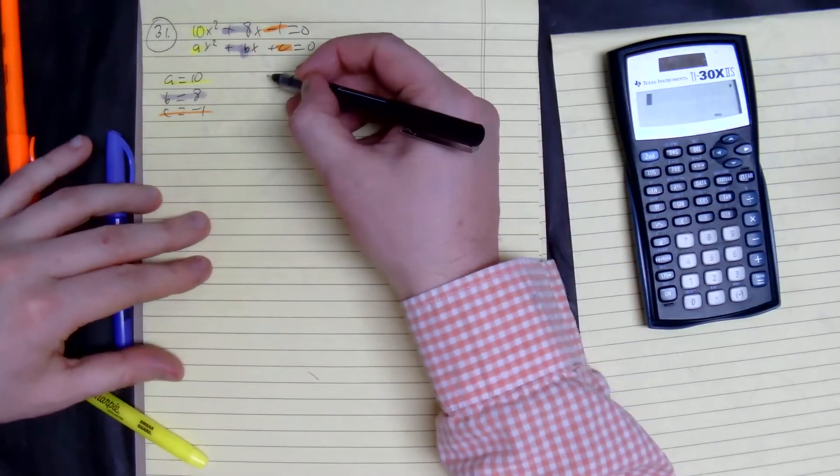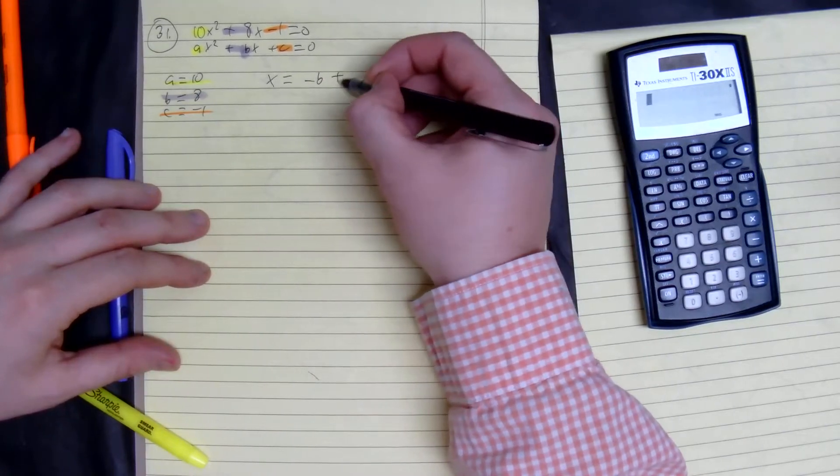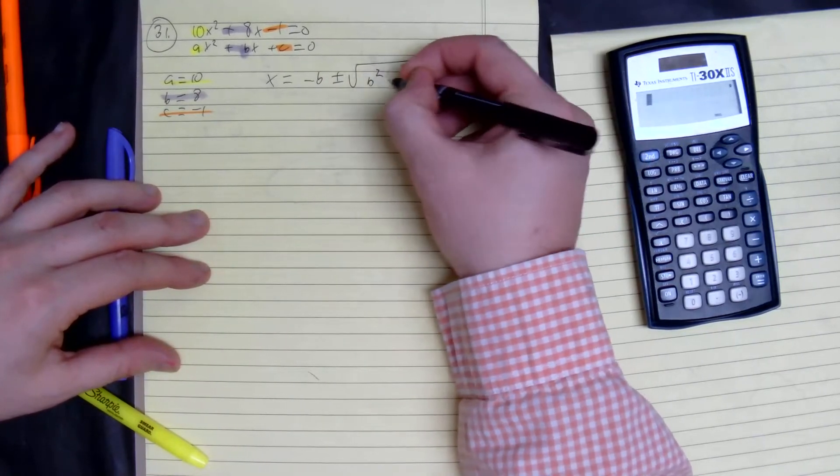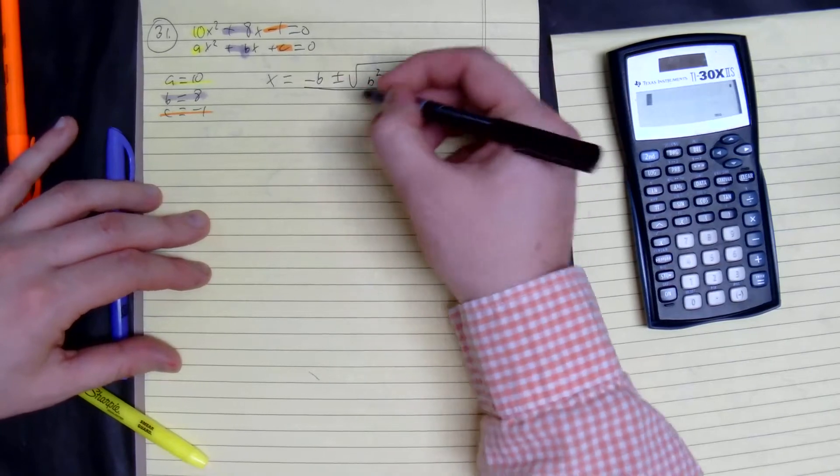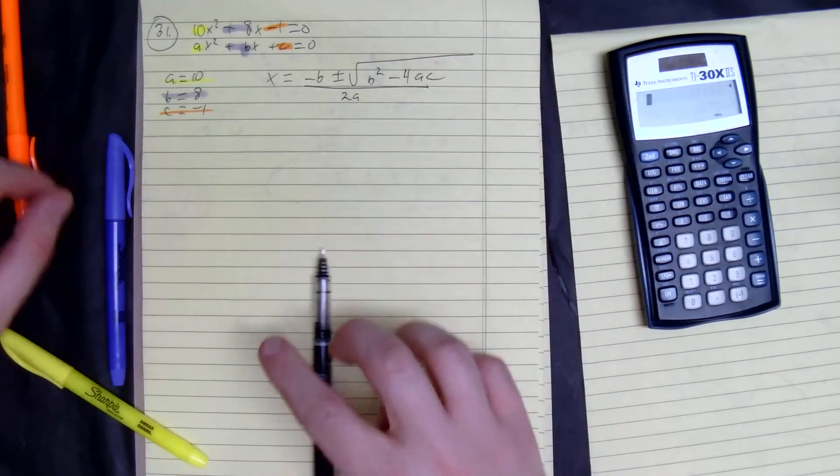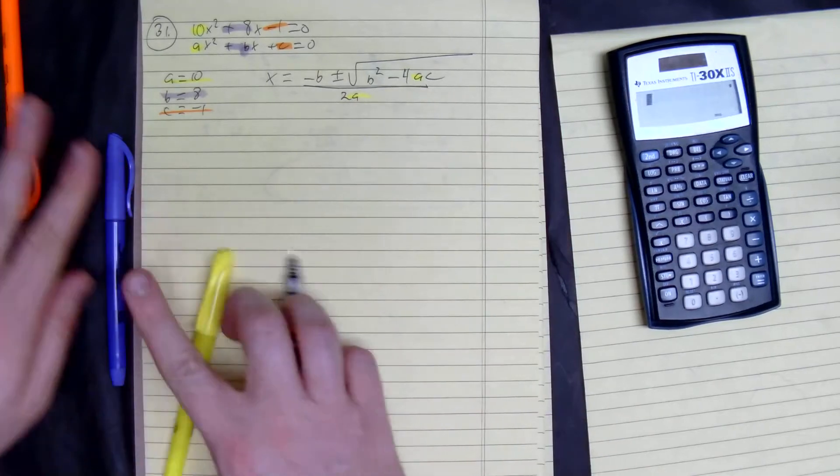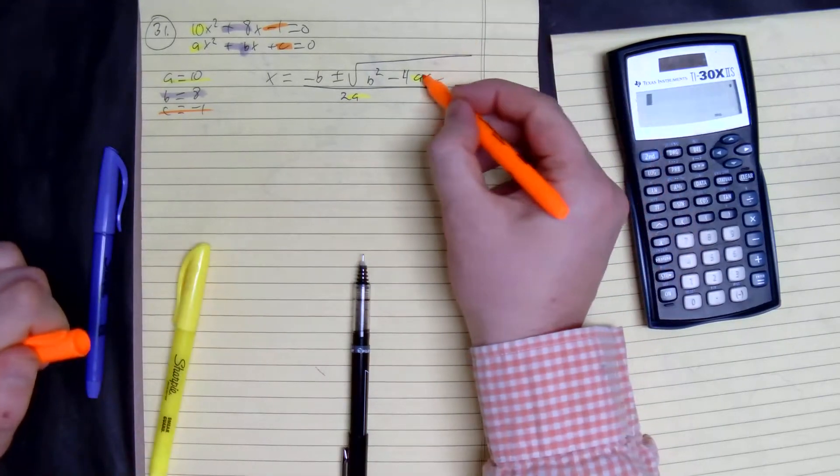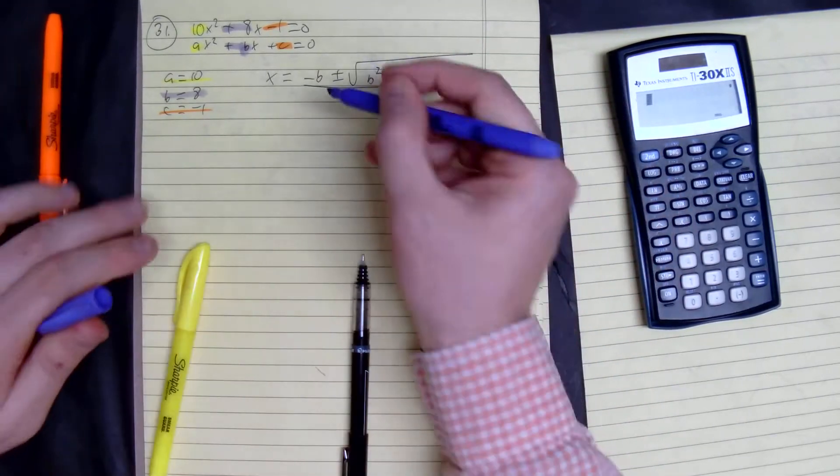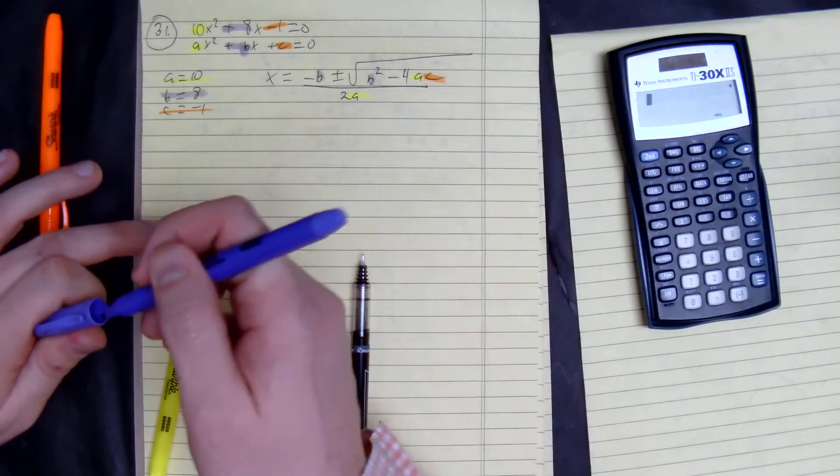So our quadratic formula is x equals negative b plus or minus the square root of b squared minus 4ac all over 2a. We start plugging things in. I'm going to highlight them just to keep myself organized. My c right here, my b right here. Good.